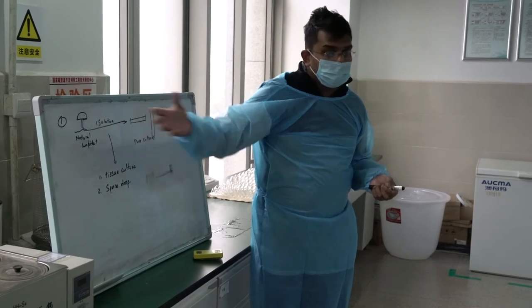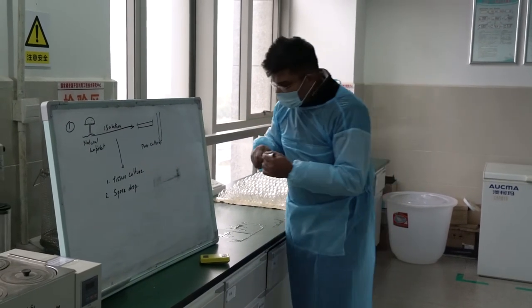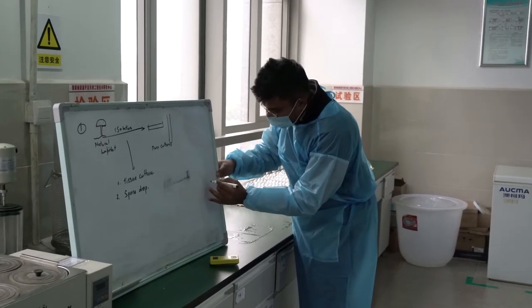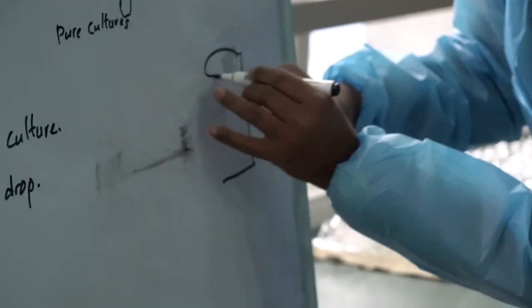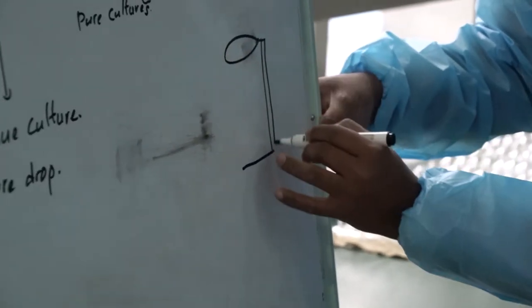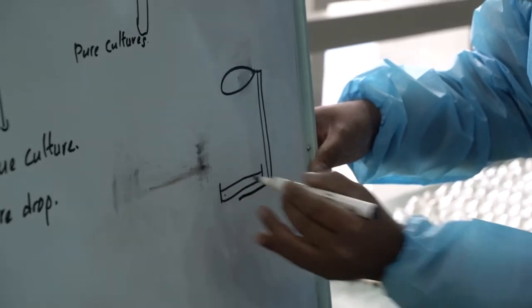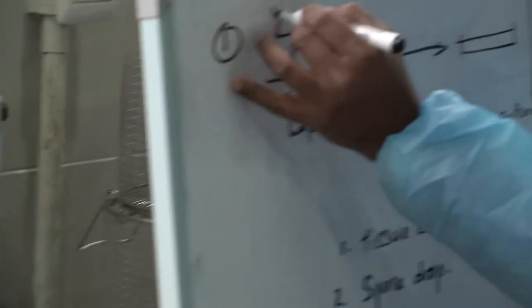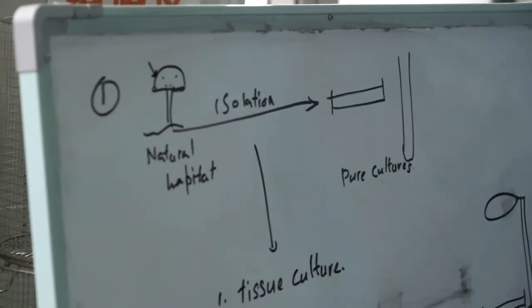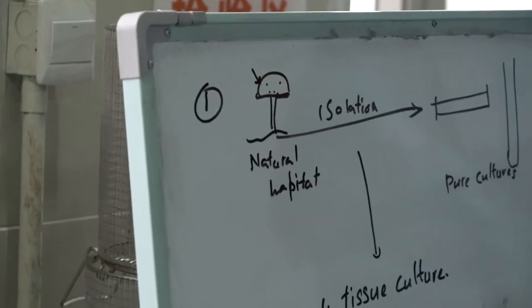If you have a mushroom with a cap, inside the laminar flow, I will make a small stand and keep the petri plate here. This is the part of the mushroom that has spores underneath. I cut this cap and keep it here.